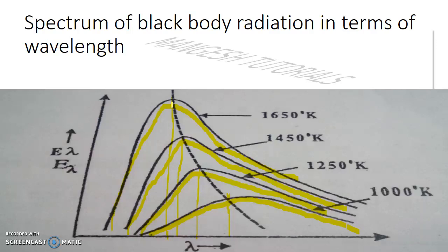This law is useful for estimating the surface temperatures of celestial bodies such as the Moon and the Sun. For the Moon, lambda-max is 14 × 10⁻⁶ meters, giving a surface temperature of approximately 200 K. For solar radiation, the maximum intensity is at 4785 angstroms, yielding a surface temperature of about 6060 K.